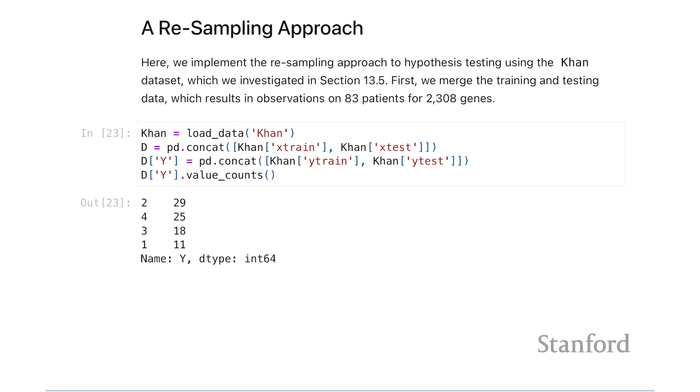The data we're going to use is the con data that we saw in our chapter on unsupervised learning. That was last chapter. And so remember, there are 2,000 genes and several patients, 83 patients. And they're in four classes. And these are all childhood cancers in four different categories.